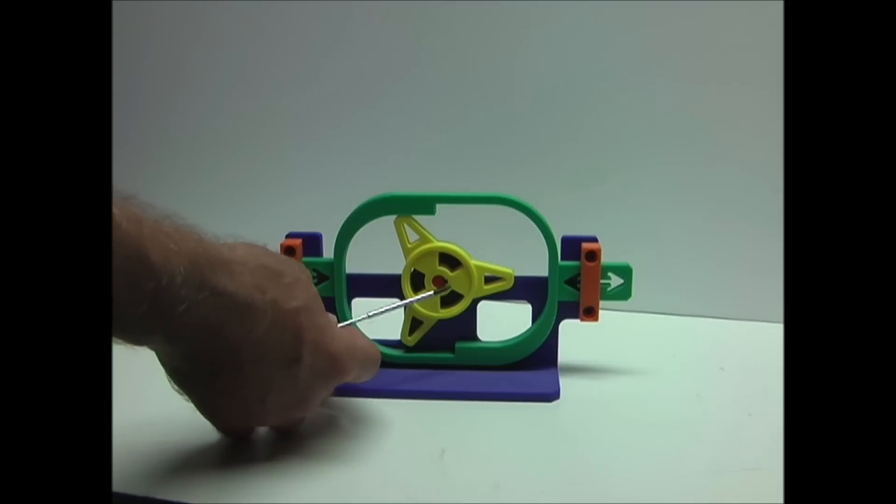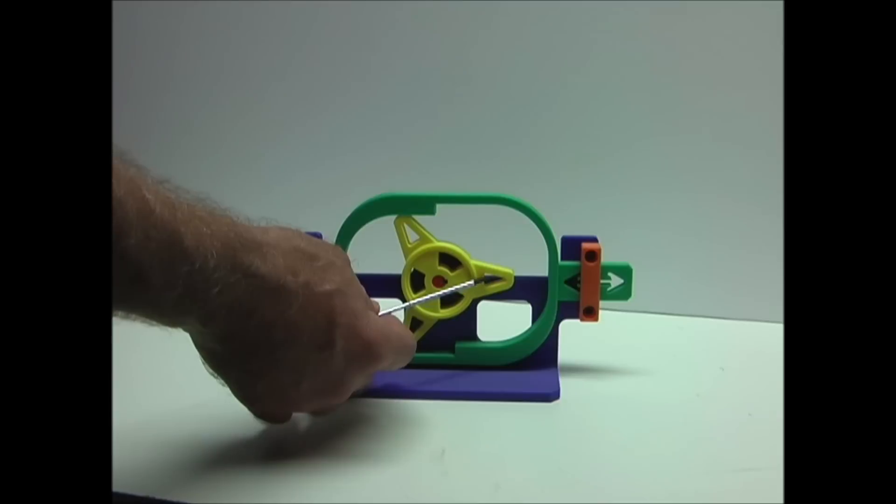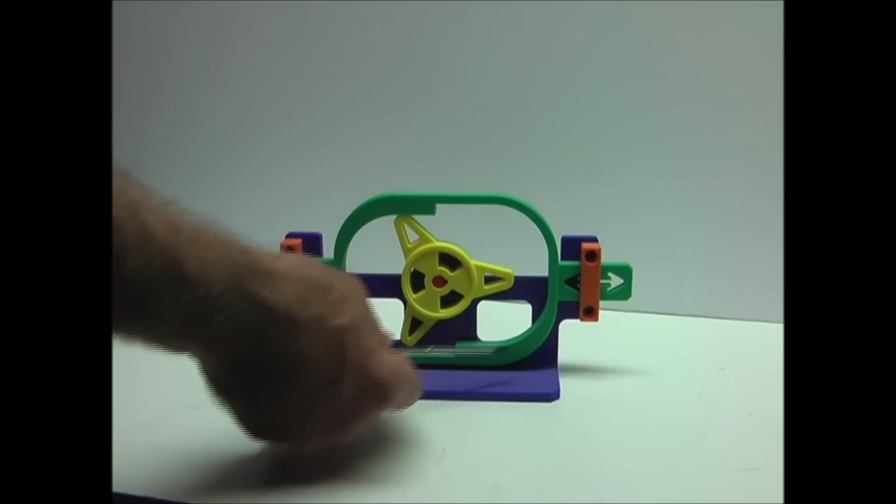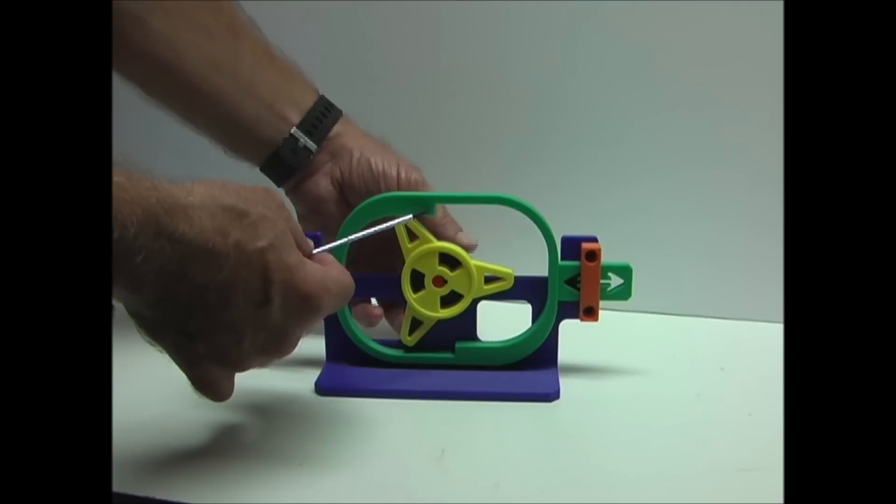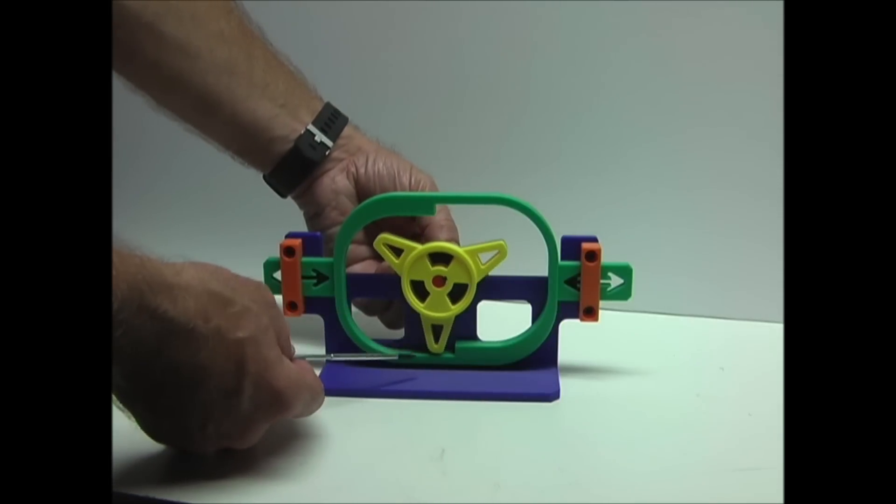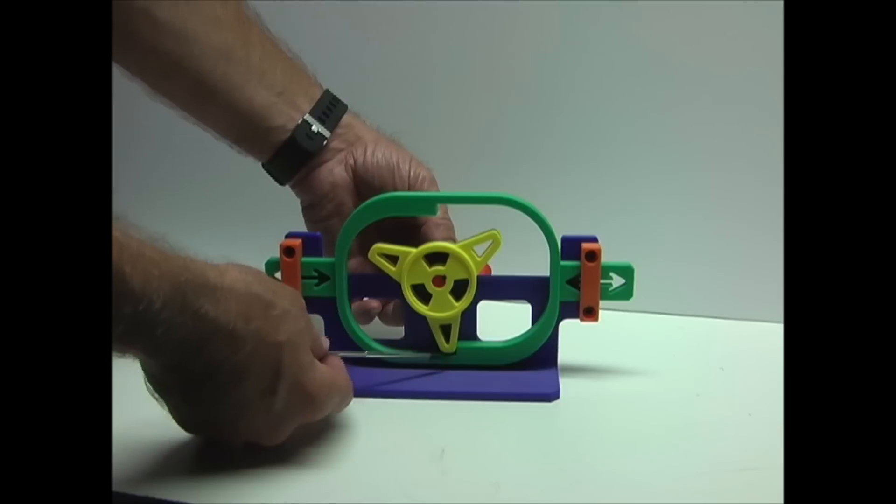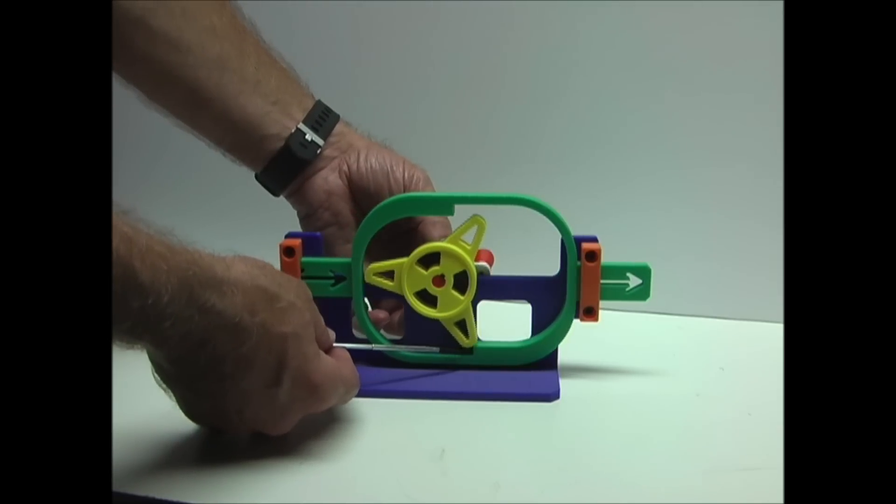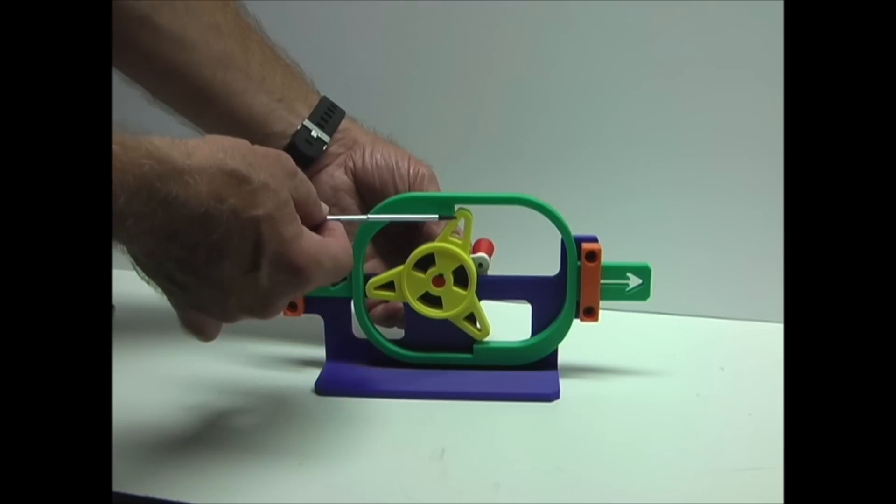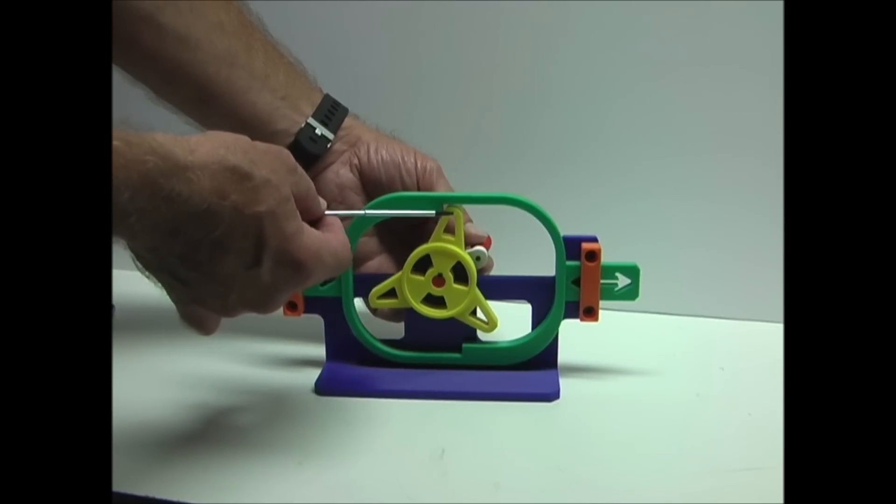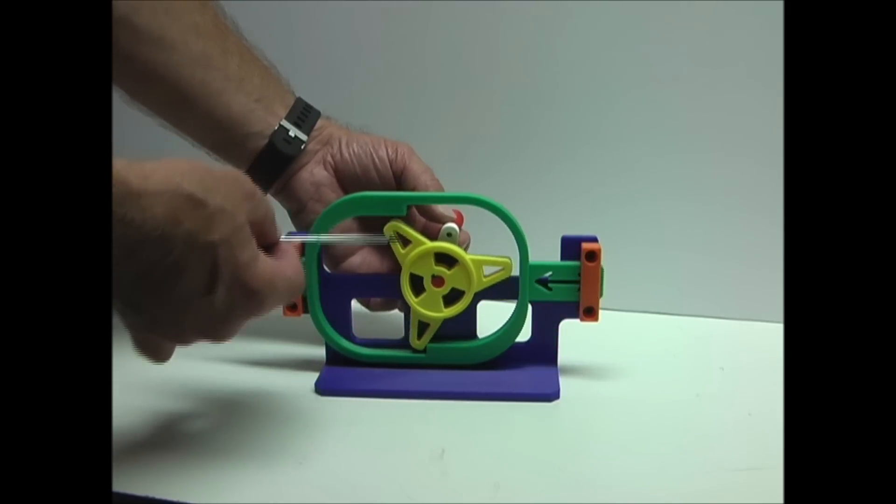This one uses a star wheel that has three points on it, and the slider has a step on the bottom and a step on the top. As the star wheel is rotated, the tip of the star hits on this step in the slider, pushing it in one direction. Once it's passed that step, the star on the other side makes contact, pushing it in the other direction.